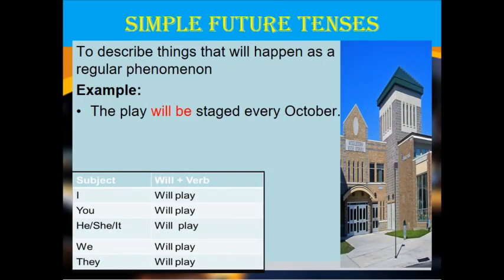Still on future tense — it can also be used to describe things that will happen as a regular phenomenon. For example: The play will be staged every October. That means it is something that will take place every year at that particular month. The table also shows how you can form future tense verbs with different pronouns.